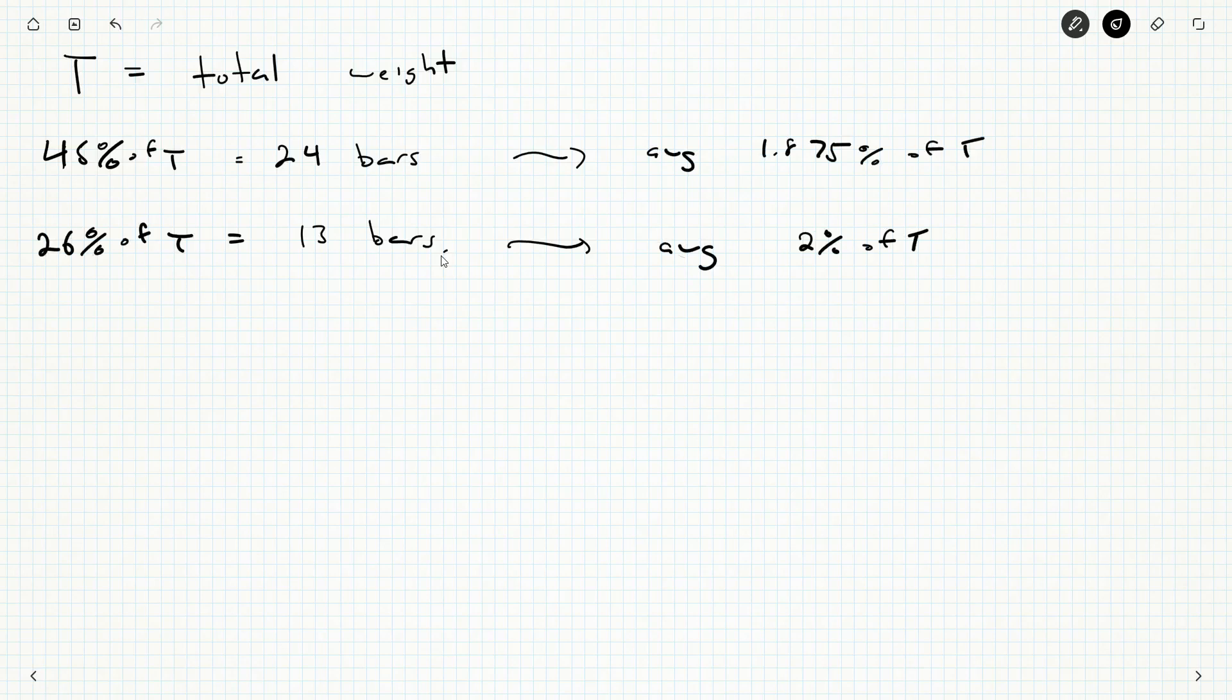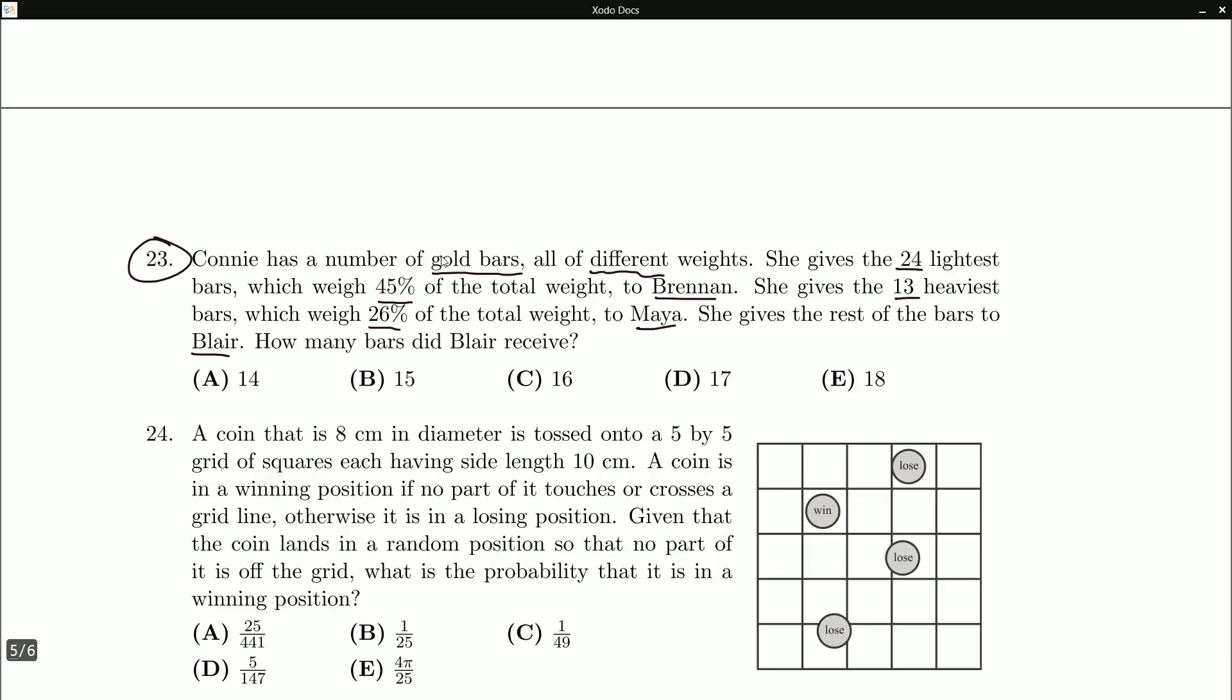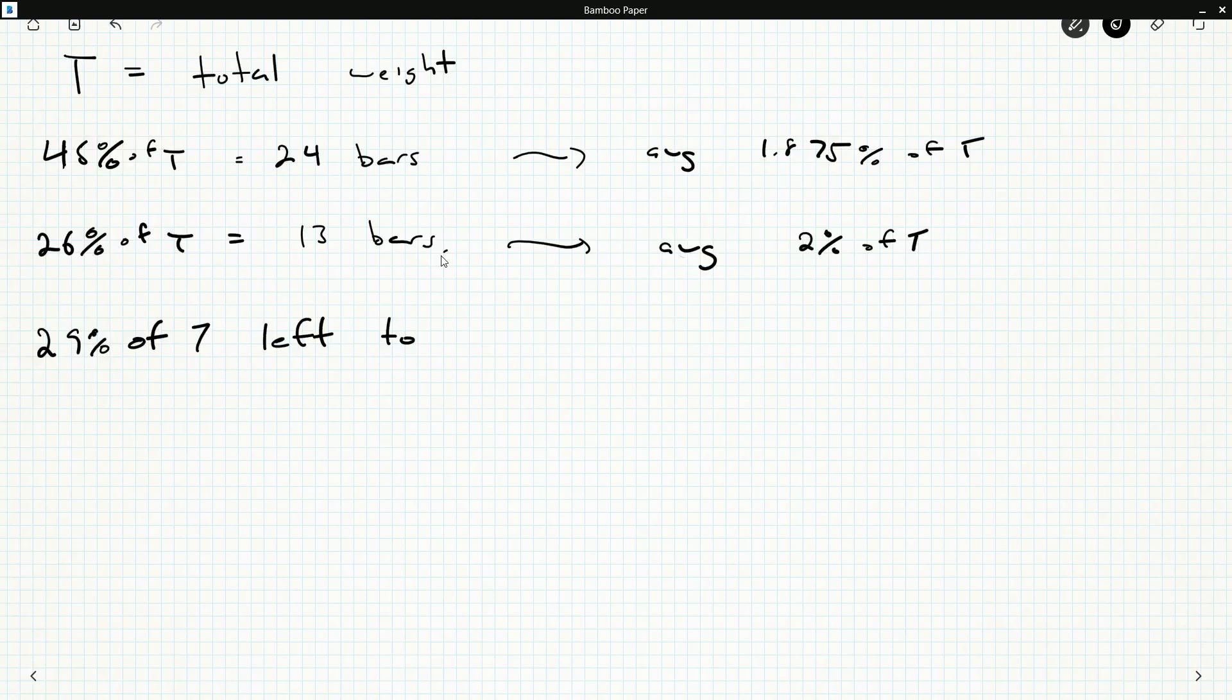Okay. Now, what's left in terms of total amount of the weight? So we have 100%, we've given away 45% of the weight, we've given away 26% of the weight. So there's 29% of T left to give to Blair.